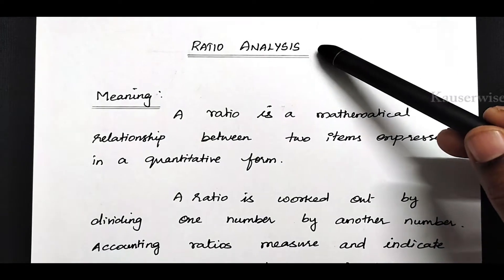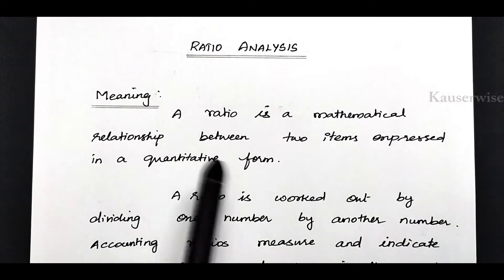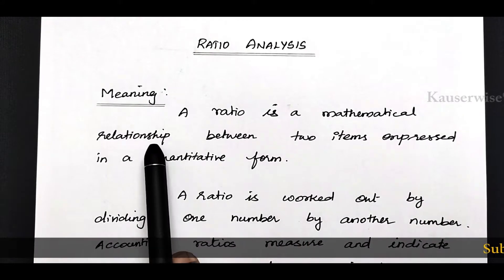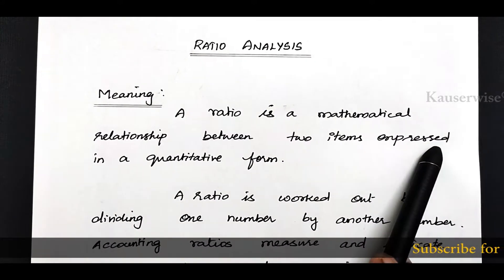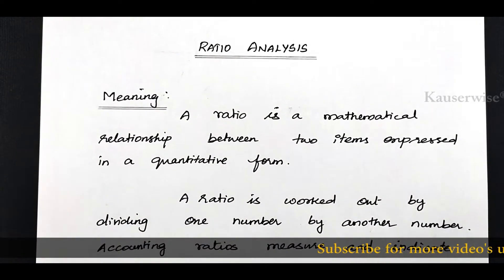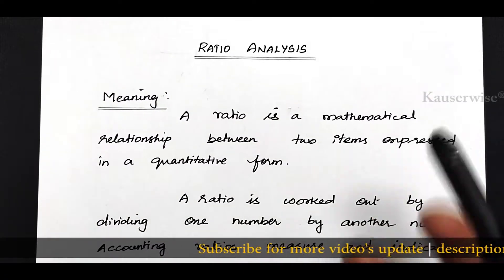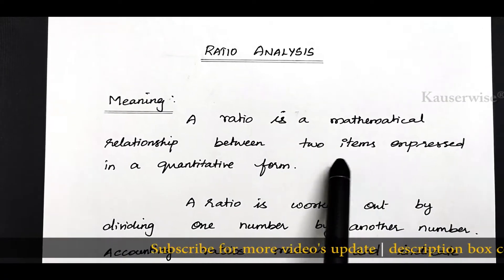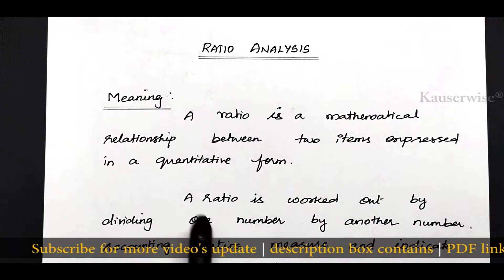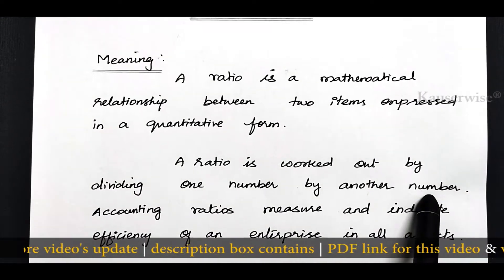Before we see the numerical problem on ratio analysis, let us try to understand the basic concepts. What is the meaning of ratio? A ratio is a mathematical relationship between two items expressed in a quantitative form. Ratio analysis involves the process of computing, determining and presenting the relationship of items and group of items of financial statements. A ratio is worked out by dividing one number by another number.